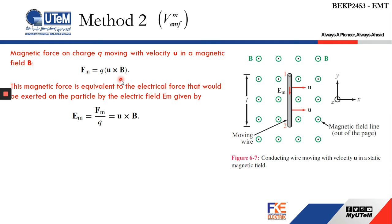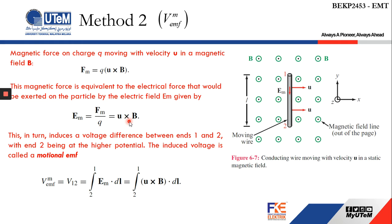The magnetic force is equivalent to the electrical force exerted on the particle by the electric field Em. From electrostatics, E equals F divided by q, so the electric field strength Em equals u cross B. This in turn induces a voltage difference between the two endpoints, and the voltage difference is calculated using v12 equals the integration of Em dot dl, where Em equals u cross B dot dl.